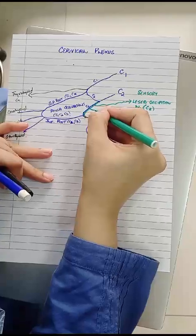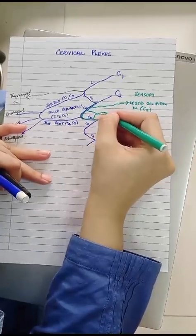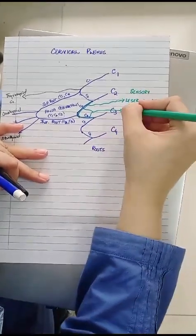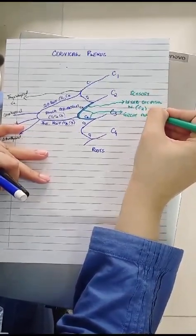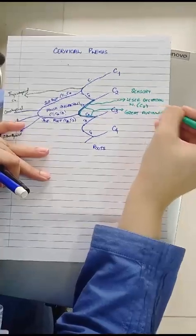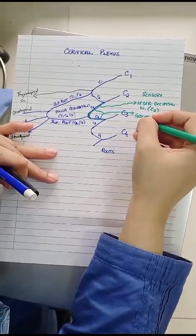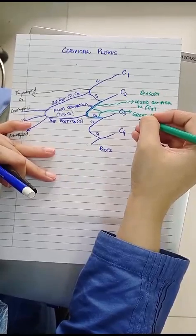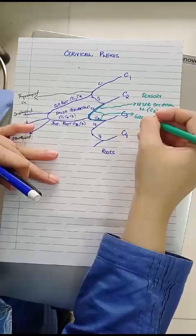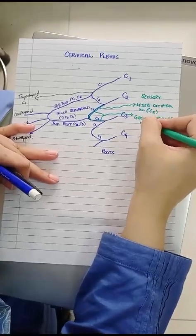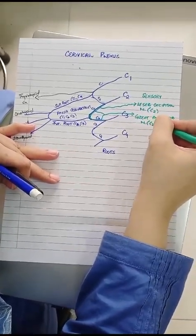Another nerve is contributed by C2 and C3 and its name is great auricular nerve. This nerve is responsible for supplying the skin over the parotid gland, its sheath, skin over the mastoid process and the area of skin between the angle of the mandible and the mastoid. Root value is C2, C3.